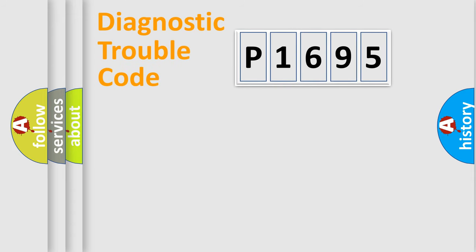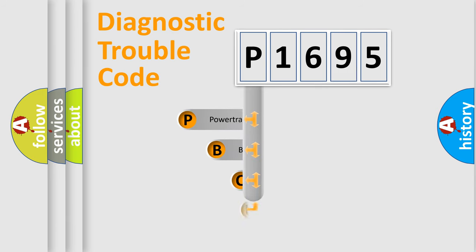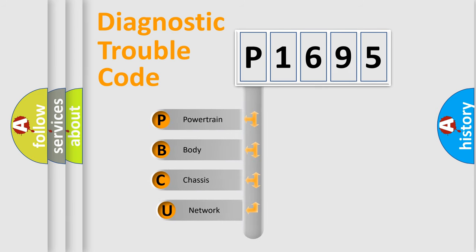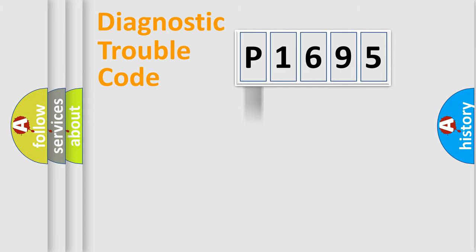Let's look at the history of diagnostic fault code composition according to the OBD2 protocol, which is unified for all automakers since 2000. We divide the electric system of an automobile into four basic units: Powertrain, body, chassis, and network.